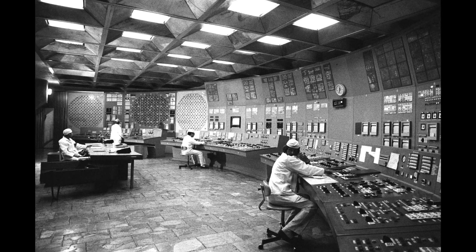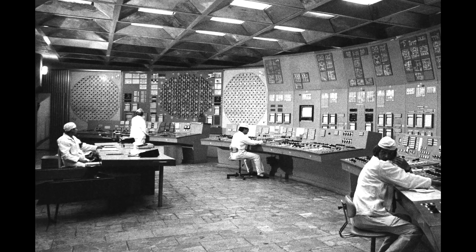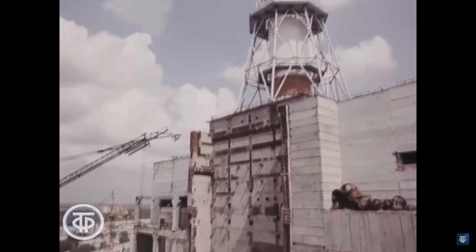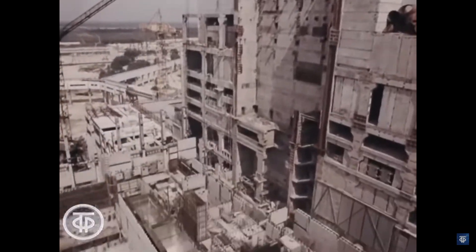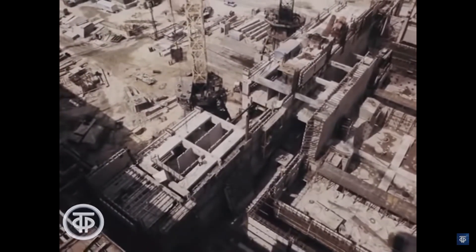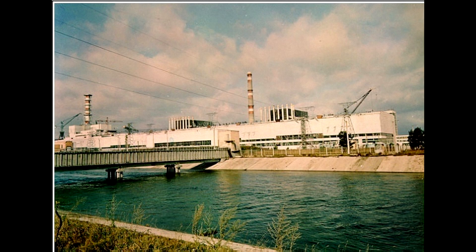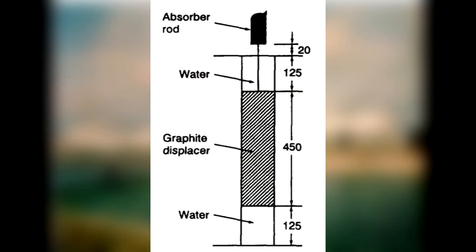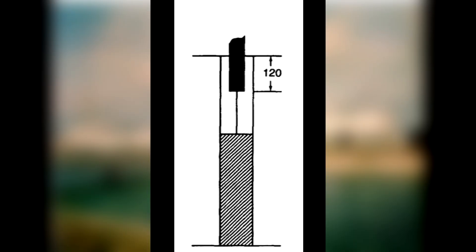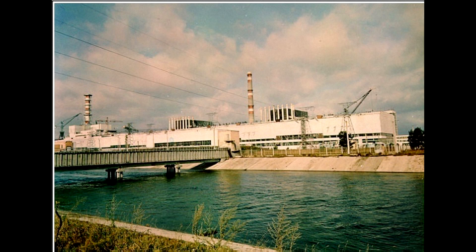We begin a second after the AZ-5 button is pressed, and the state of the core is already dire. Reactivity has grown from 200 to 320 megawatts of thermal power. The decrease in water entering the core has caused the accumulation of voids within, increasing the rate of reactivity faster than the automatic regulator control rods can suppress it. Now inserting the control rods is only going to make the situation worse. As the control rods enter, the graphite displacers begin to displace water at the bottom of the core, greatly increasing the rate of fission, but the control rods are moving so slowly that they cannot reduce reactivity at a great enough rate.